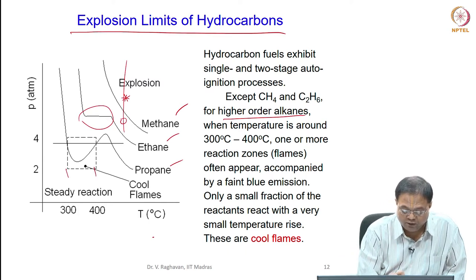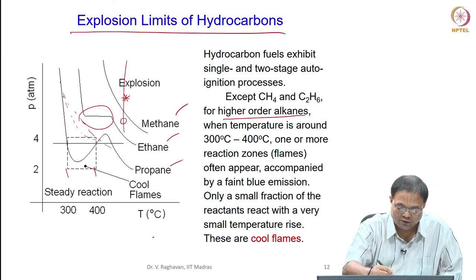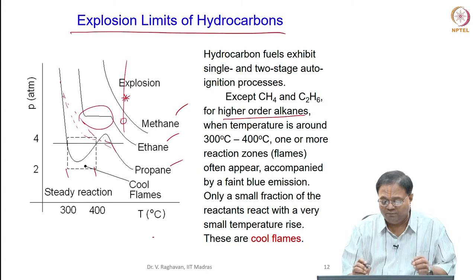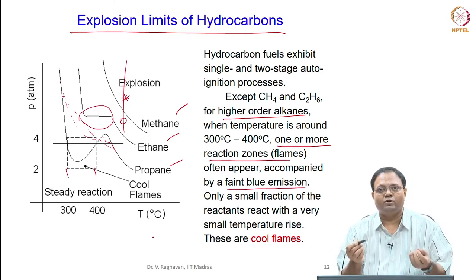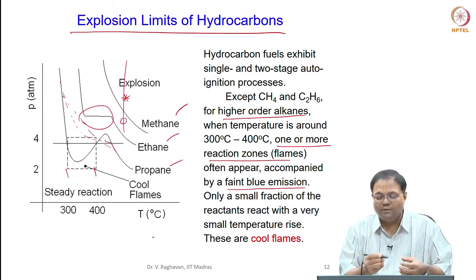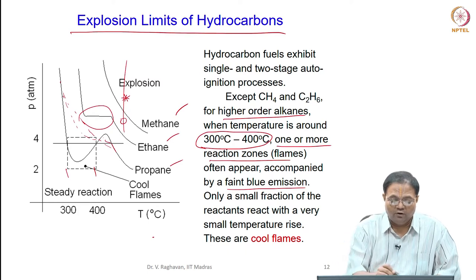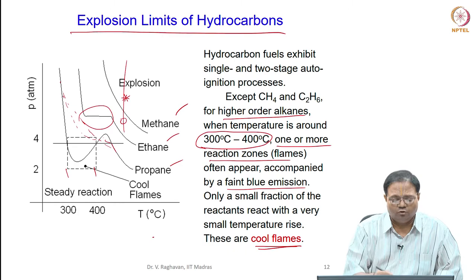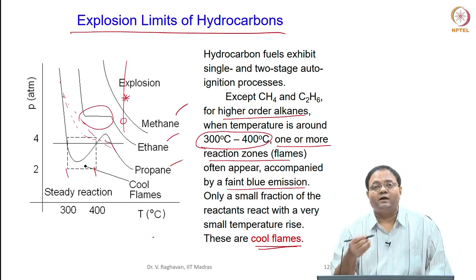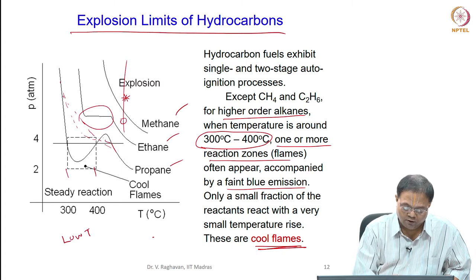When the temperature is in the range of 300 to 400 degrees centigrade, we have a cool flame region. Instead of going smoothly like methane or ethane, you can see a dip - some flashes of flames, one or more reaction zones in the volume with a faint blue emission. It is not a bright blue, it is a faint blue emission, meaning some reaction has occurred at very low temperature of 300 to 400 degrees centigrade causing some flame to propagate. This is called cool flames, and it occurs only for higher hydrocarbons.